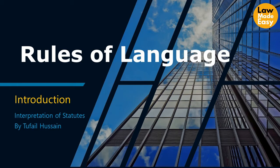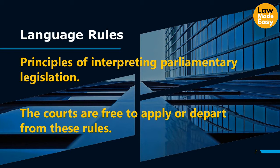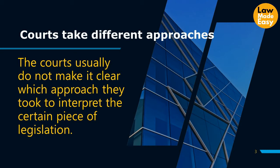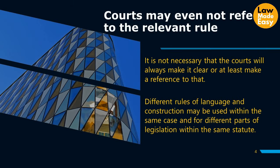We are now going to look at the rules of language — such as noscitur associiis and ejusdem generis. These rules are not rules in the strict legal sense, just like the rules of construction. They are principles of interpreting parliamentary legislation. The courts are free to apply or depart from these rules depending upon the approach they take. Please note that when courts take different approaches to interpretation, they usually do not explicitly state which approach they took — though it is usually obvious if you read how the court reached its conclusion. Judges may use different rules of language and construction within the same case and for different parts of legislation within the same statute.